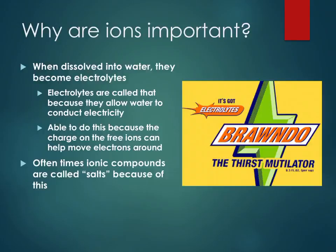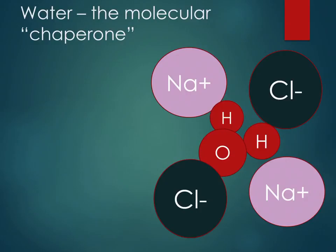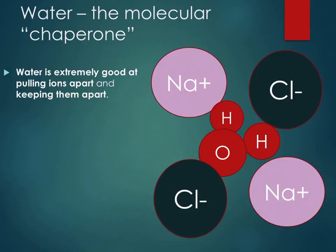The reason ionic compounds are able to dissolve into water is because water is a special molecule — it's able to pull ions apart and keep them apart. The reason water can do this is because, as we touched on in the last lecture and will cover more next unit, the hydrogens have a partial positive charge and the oxygen is partially negative. So water is able to pull these ions away from each other, dissolving them.